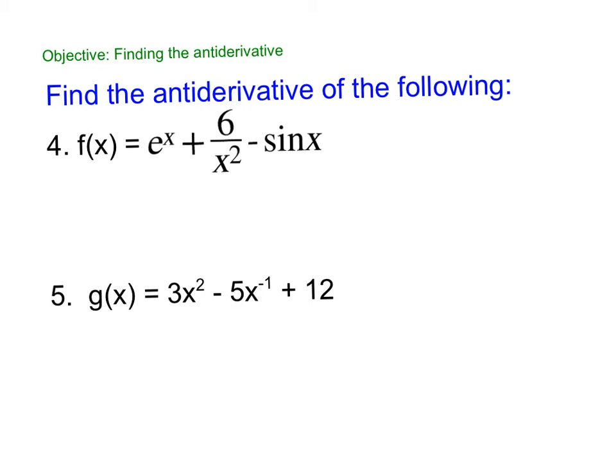All right, so I want you to pause the video and try these on your own. So I'm going to start by rewriting this. This is e^x + 6x^(-2) - sin(x).